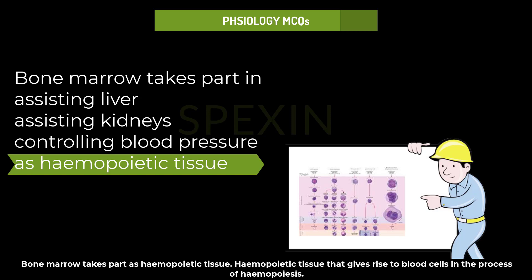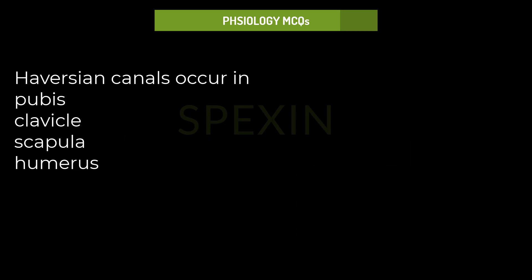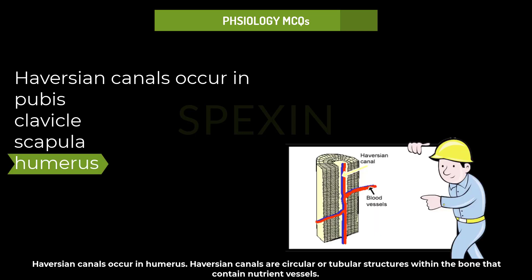Haversian canals occur in: pubis, clavicle, scapula, or humerus? Haversian canals occur in the humerus. Haversian canals are circular or tubular structures within the bone that contain nutrient vessels.